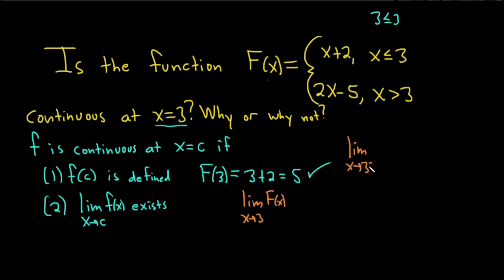So if we take the limit from the left of big F of x, this is the same as the limit as x approaches 3 from the left. And when you approach 3 from the left, you're smaller than 3. So you're using this condition here. So basically, you replace your big F of x with x plus 2. So this is x plus 2. Now we can plug into 3, so we get 3 plus 2, which is equal to 5.